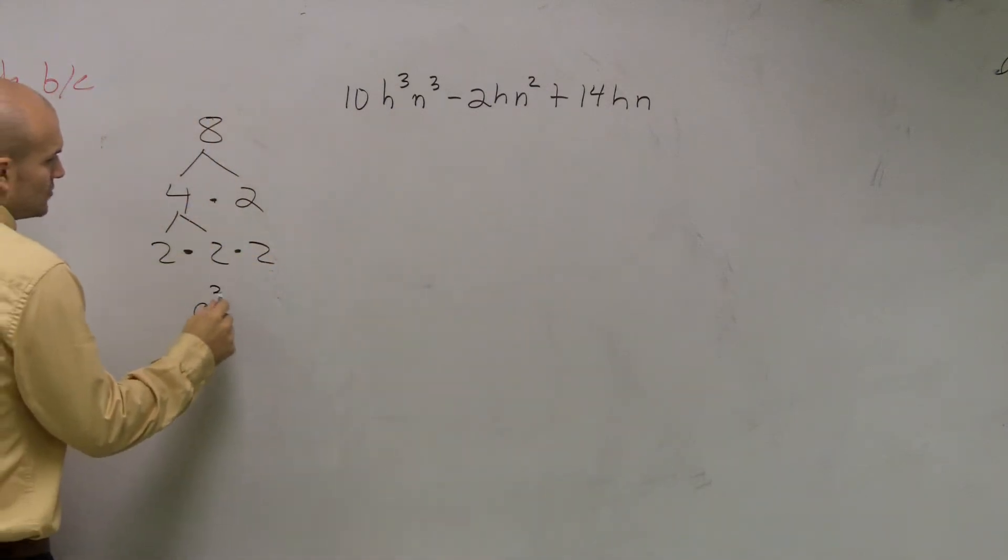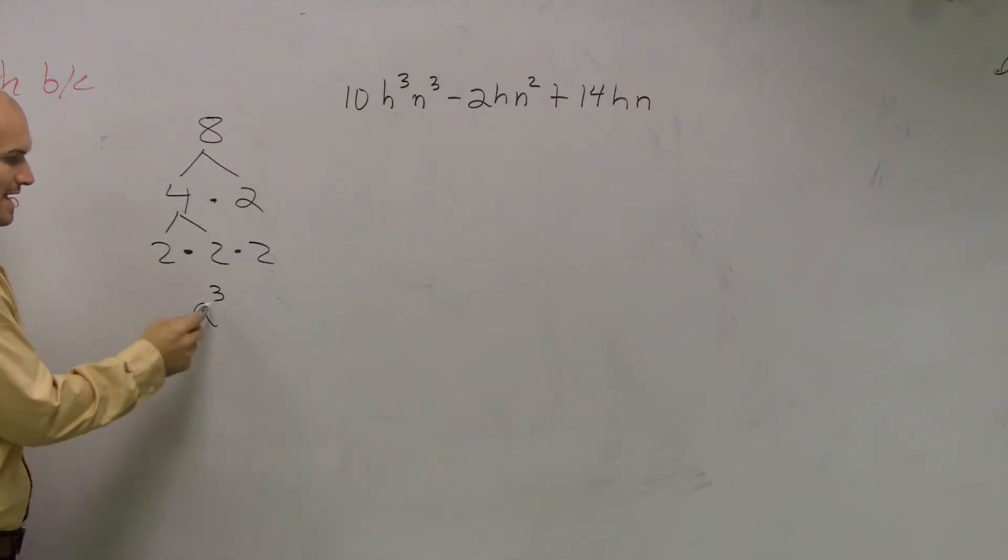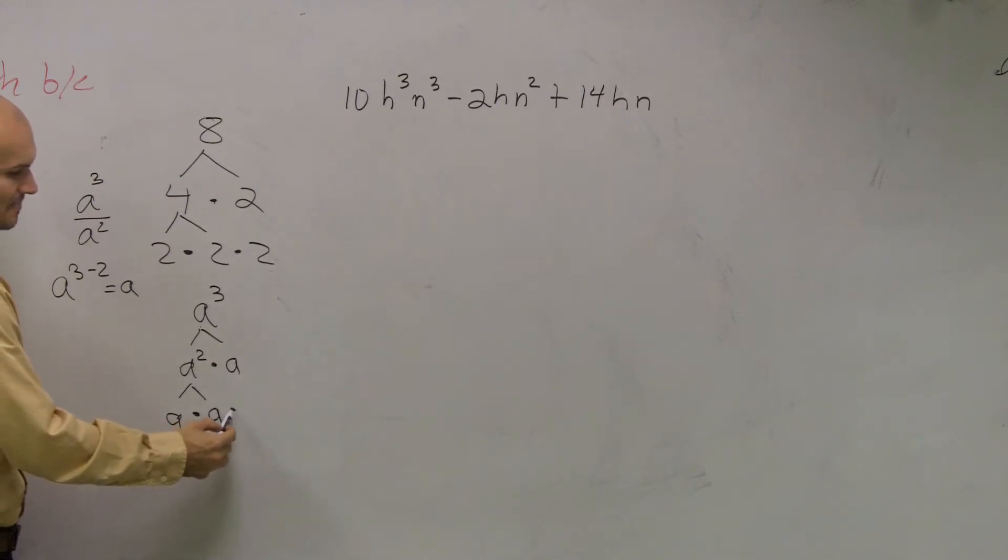Is a³ prime? Now, a³ can be broken down. First of all, a³ can be divided by a². Say what? How do you divide? Remember, when we divide a number by another number with exponents, we subtract the exponents. Right? So I can say a² times a is a³, and then I can break down a² again. That's not a prime number as well. That means a times a times a.